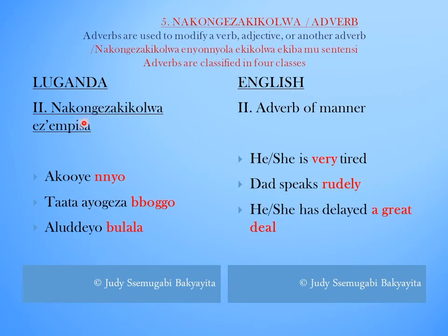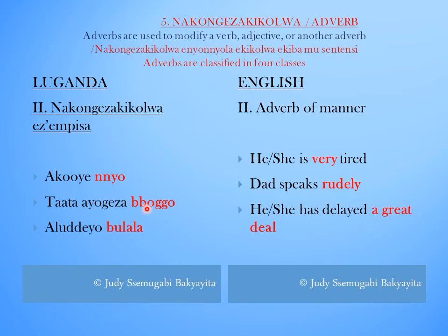The second classification is Nakongeza chikolwa eze mpisa — Adverb of manner. For example: Akoe nyo — He or she is very tired. Tata ayugeza bogo — Daddy speaks rudely. Aludeyo bulala — He or she has delayed a great deal.